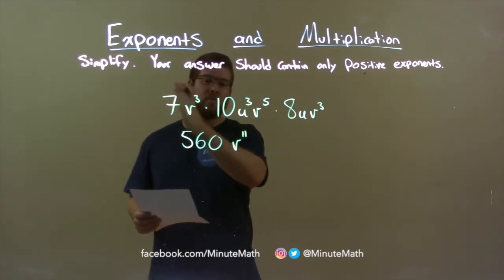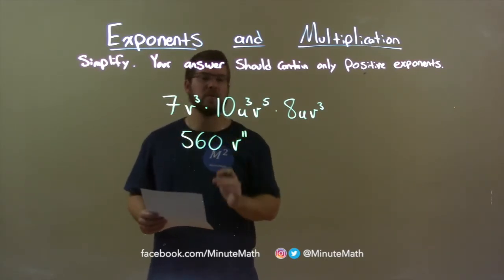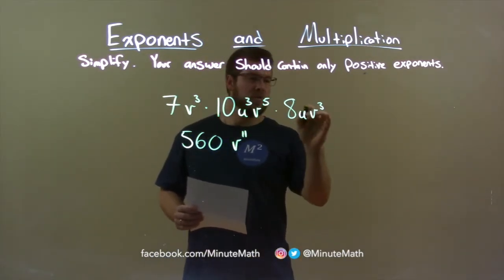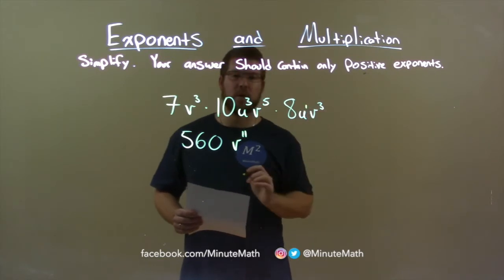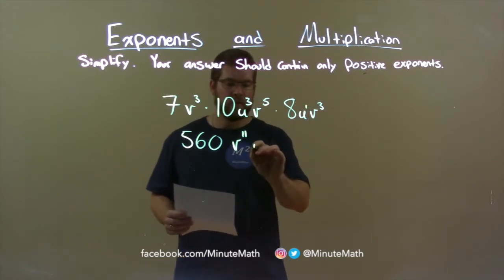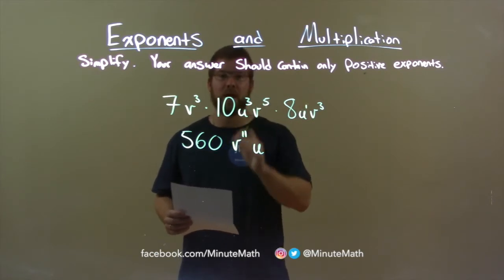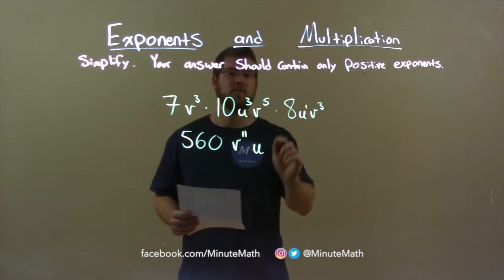Next variable I see when I'm done with the first term. Second term, I see a u. I have a u to the third power and one u here. So that u can be written as u to the first power. So the variable here for u, when we multiply it, u to the third times u to the first. We add the exponents again and 3 plus 1 is 4.